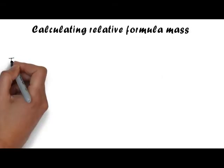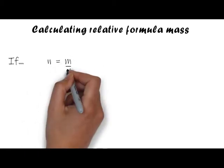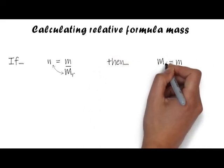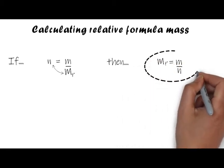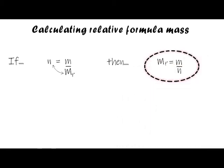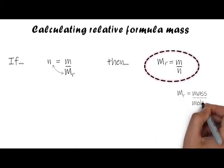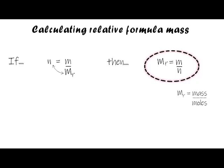We might also need to calculate relative formula mass. Rearranging n = m / Mr again by swapping n and Mr gives Mr = m / n. So relative formula mass equals mass divided by number of moles. You don't necessarily need to learn three separate equations — just learn one and know how to rearrange it.